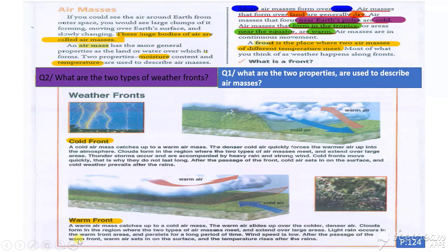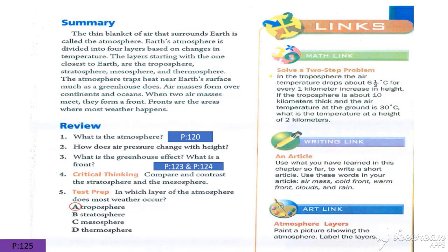Do you remember this picture? We solved this question: number one, what is the atmosphere? The answer, page 120 — the layer of air that surrounds our planet is called the atmosphere. Number two: how does the air pressure change with height? The answer, page 121: the higher you go in the atmosphere, the farther apart the air particles are, so the air pressure is less, and density is less.